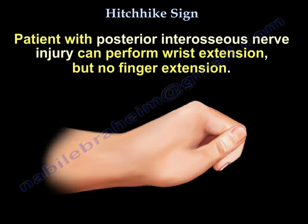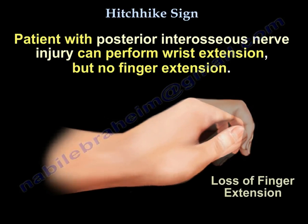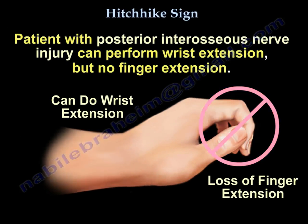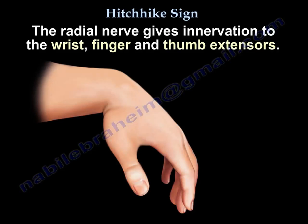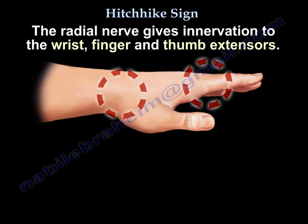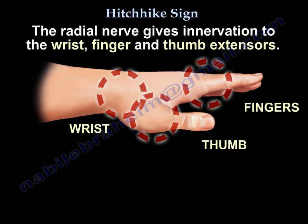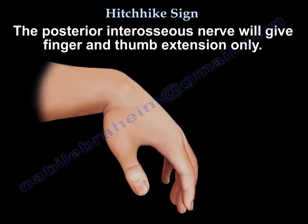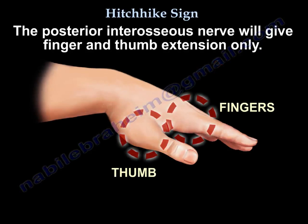Here is an example of how you examine the patient for posterior interosseous nerve palsy. The patient can perform wrist extension but has no finger extension. The radial nerve provides innervation to the wrist extensors, finger extensors, and thumb extensors, while the posterior interosseous nerve provides finger and thumb extension only.